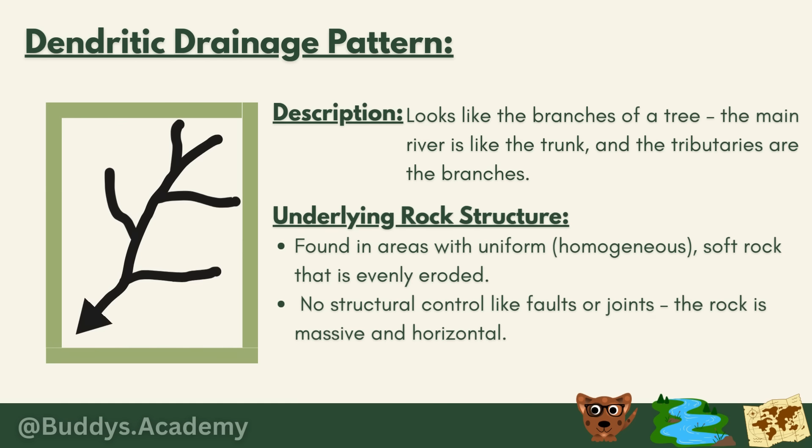Now let's take a look at the different types of drainage patterns — there are seven types you will be required to know. The first is the dendritic drainage pattern, which looks like the branches of a tree. The main river is like the trunk and the tributaries are the branches. It also resembles a leaf, where the tributaries are the veins — if you hold a leaf up to the light, you will see exactly what this looks like.